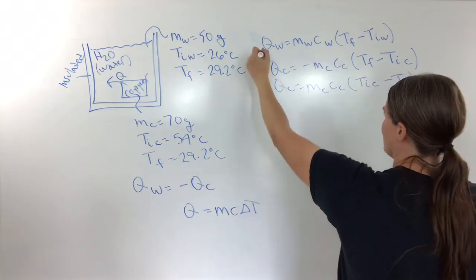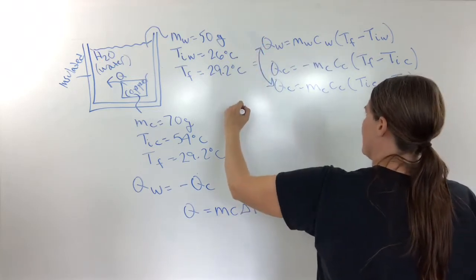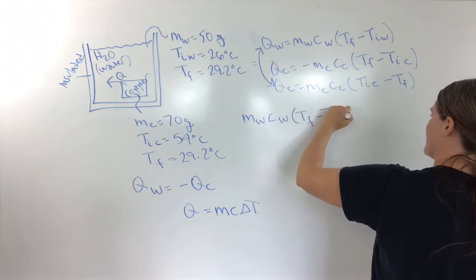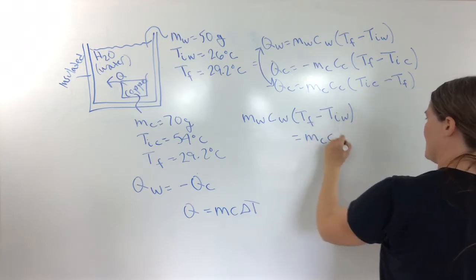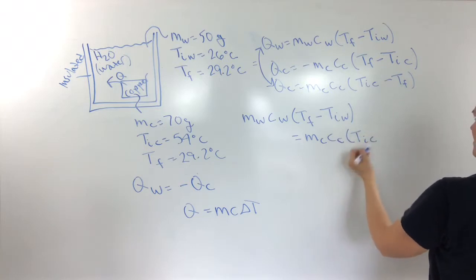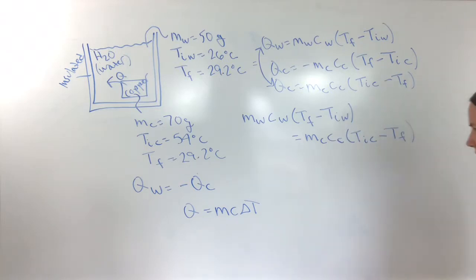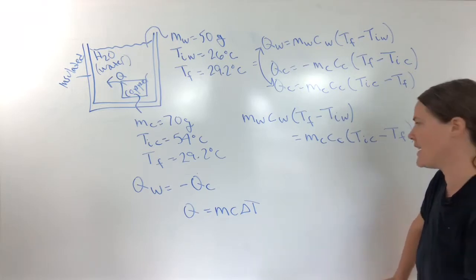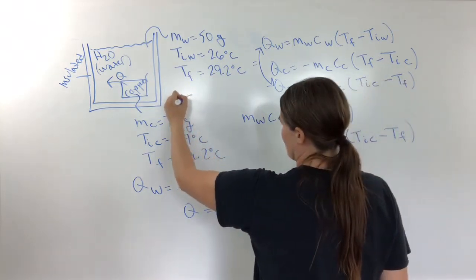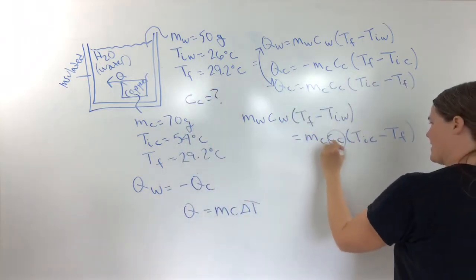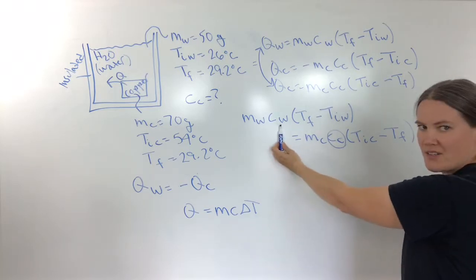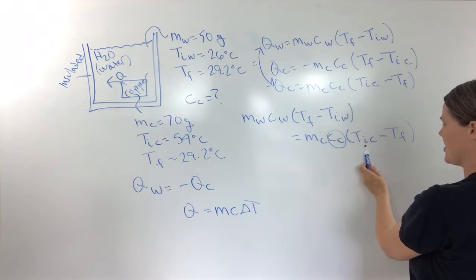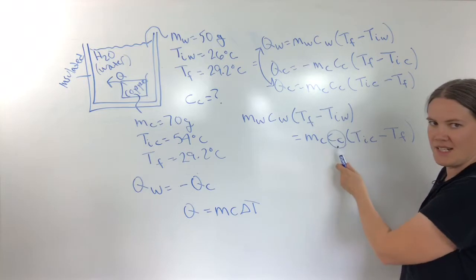Since I've already accounted for the negative sign, I set these two equal: mass of water times specific heat of water times (T_final minus T_initial of water) equals mass of copper times specific heat of copper times (T_initial of copper minus T_final). Looking at this equation, what the problem wants us to find is the specific heat of the copper. We know the mass of water, specific heat of water, final temperature, initial temperature of water, mass of copper, and initial temperature of copper — so we can solve for the specific heat of copper.